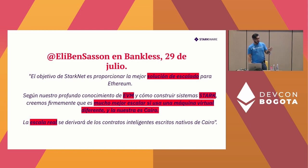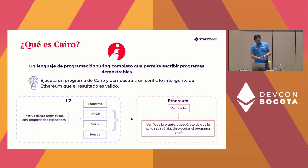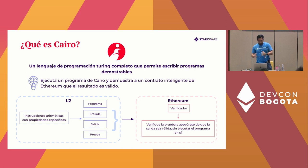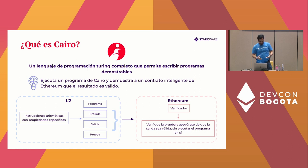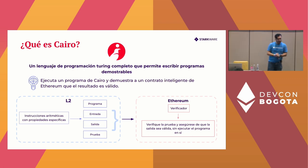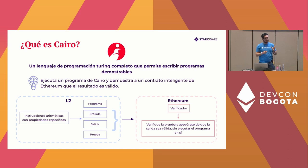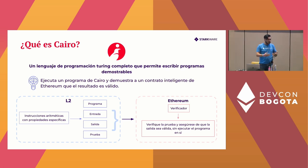Cairo is both a virtual machine and a language. It is a Turing-complete programming language that allows you to create provable programs. You can execute your Cairo program and then prove to a smart contract on layer one — on Ethereum — that a transaction was correct. This allows much cheaper transaction costs, because when the smart contract on layer one validates that the proof is correct, it's much cheaper than running the transaction itself. This gives us much more scalable solutions using layer two with Cairo and StarkNet.